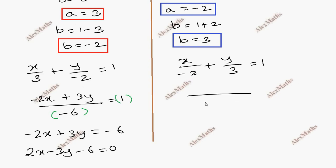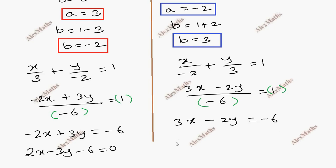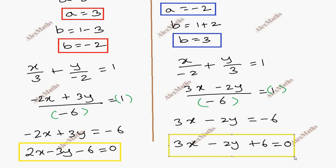For the second equation, using a equal to 3 and b equal to minus 2: x by 3 plus y by minus 2 equal to 1. After cross multiplication, minus 6 equals 3x minus 2y, giving 3x minus 2y plus 6 equal to 0. So the two answers are 2x minus 3y minus 6 equal to 0 and 3x minus 2y plus 6 equal to 0.